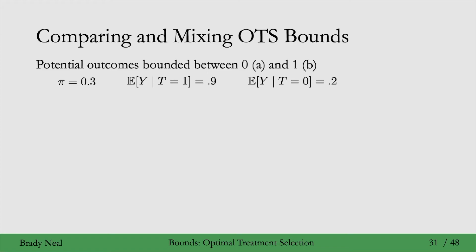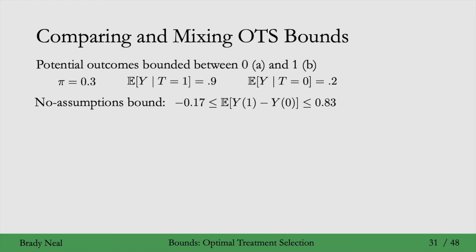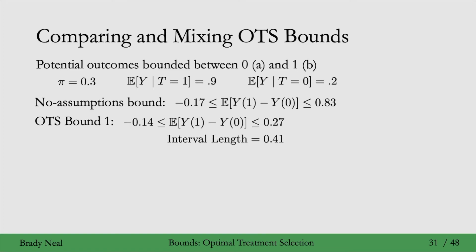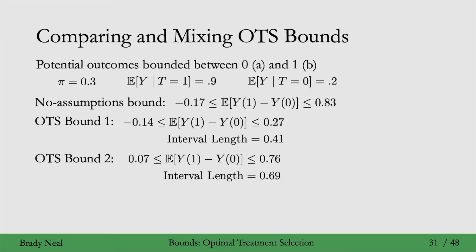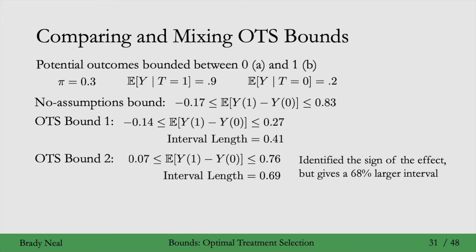Comparing the two OTS bounds: here are the no assumptions, OTS bound 1, and OTS bound 2 results. OTS bound 2 identified the sign of the effect, but gives a 68% larger interval — 0.69 versus 0.41 for OTS bound 1. Since both bounds follow from the same OTS assumption, we can take the better lower bound from OTS bound 2 and the better upper bound from OTS bound 1.